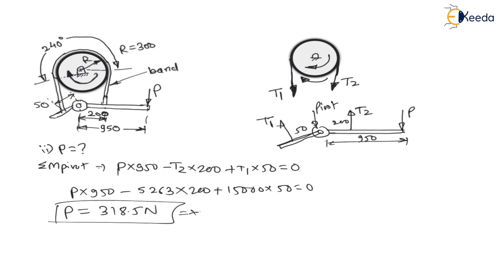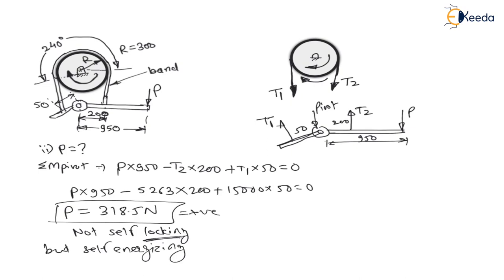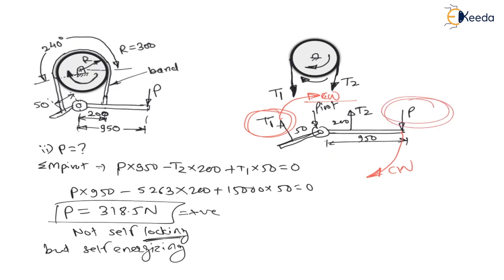Solving for P gives P = 318.5 Newton. As the actuating force is positive, it is not self-locking. But it is self-energizing, because one of the tension moments and the applied moment act in the same direction on the lever. Since a force is required, it is not self-locking.